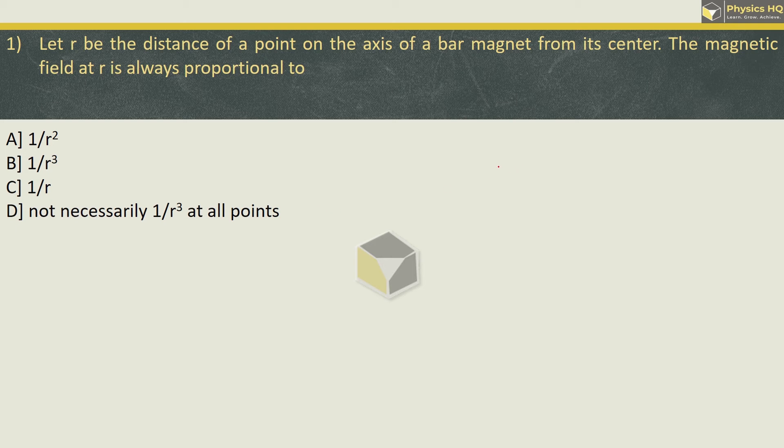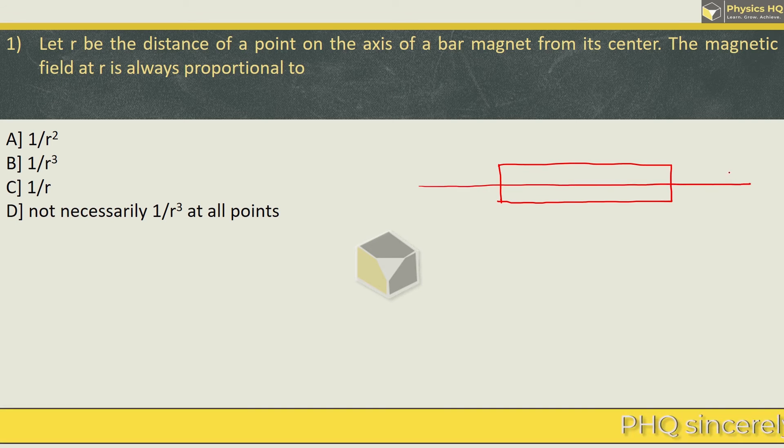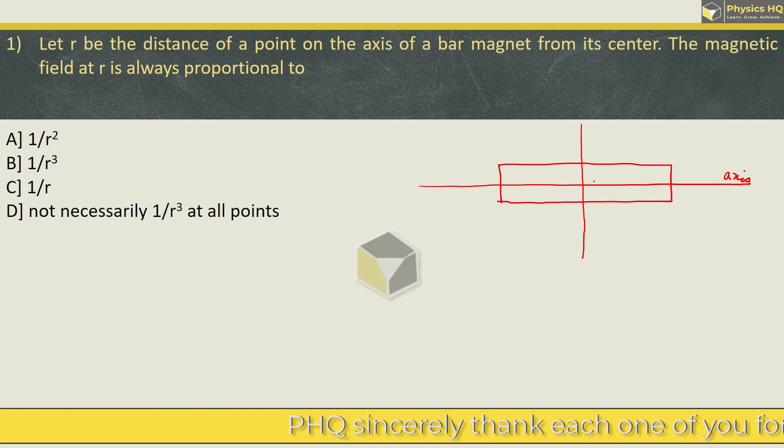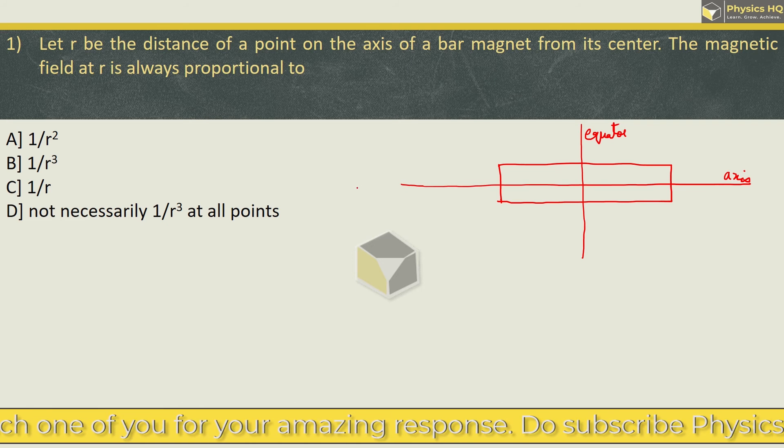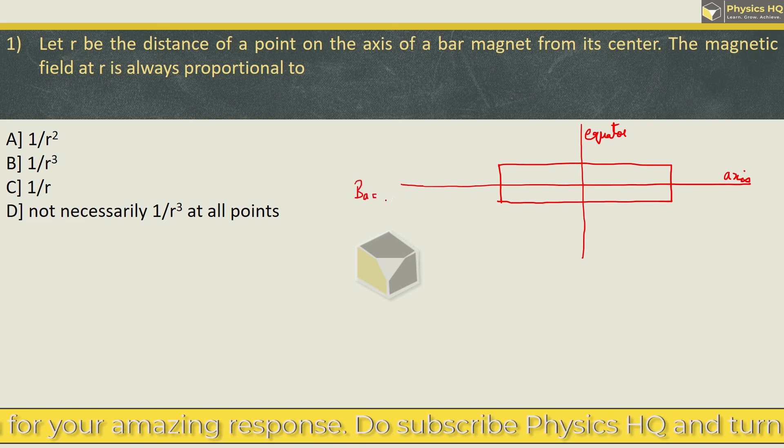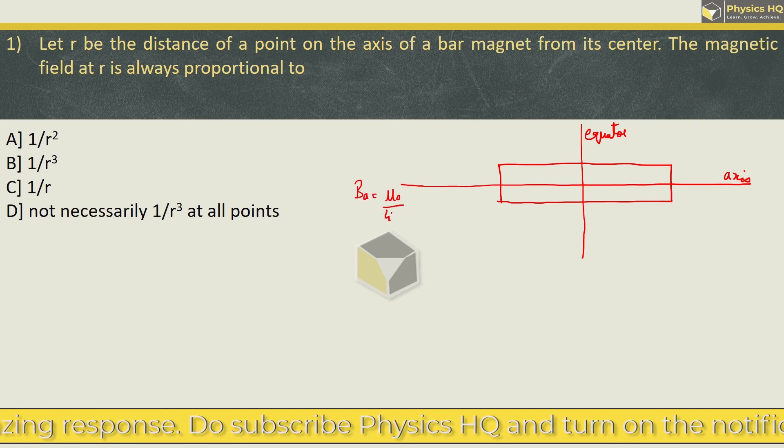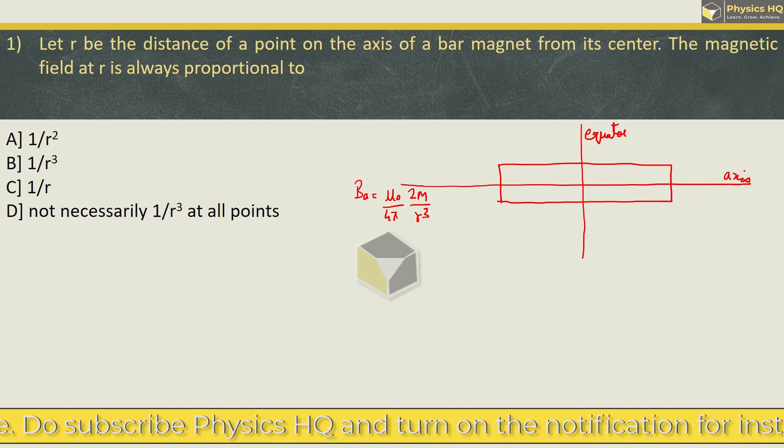Now please remember this. For a bar magnet, this line is the axis and this line is equal to the equator. Now if you want to find magnetic field at any point on this axis, then its formula is μ₀ upon 4π times 2m by R cubed.